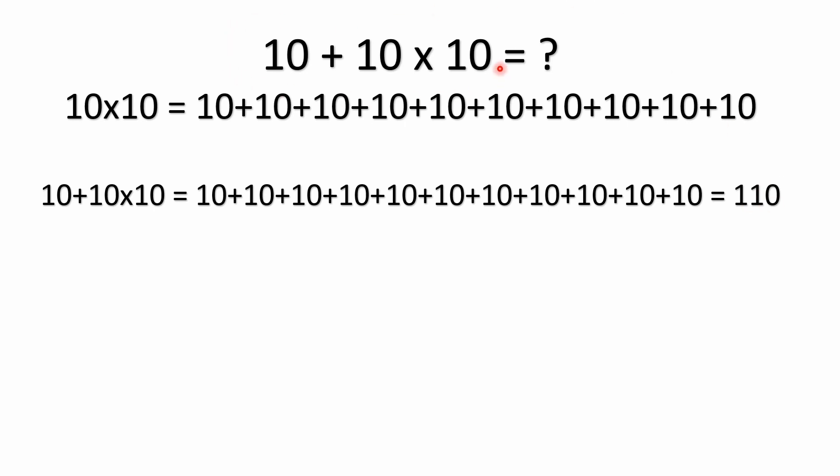Now that might seem tricky to some people. Some people may say, well, why isn't the multiplication first? I'm reading it left to right. 10 plus 10 is 20, 20 times 10 is 200, but that's not the way mathematics works.